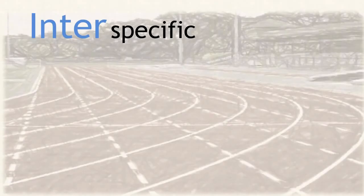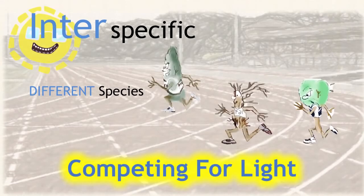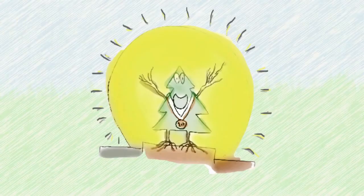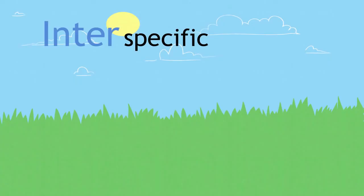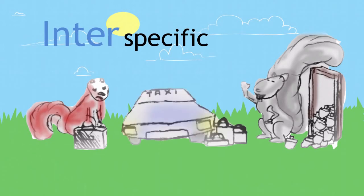On the other hand, interspecific interactions are the effects that individuals of different species have on one another. For example, interspecific competition may involve different species of plants and trees competing for light. Another example is that between the grey squirrel and the red squirrel, who compete over the same habitat. The more aggressive grey squirrel has over time pushed many red squirrel populations out of their habitats.